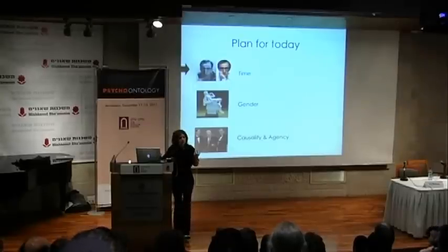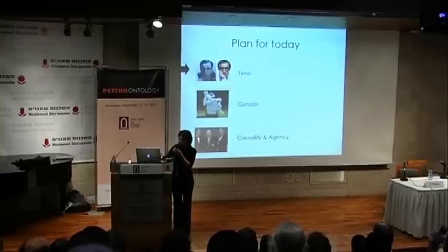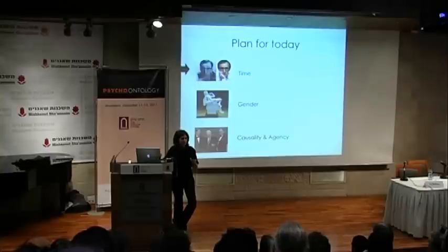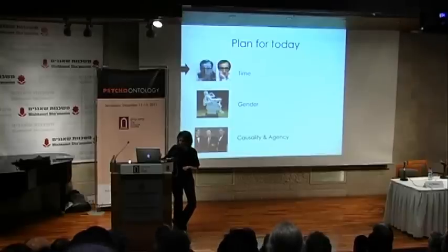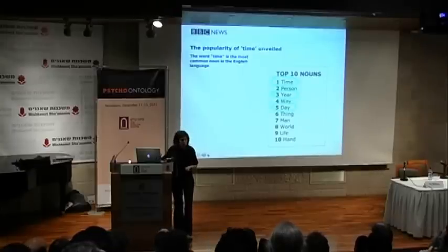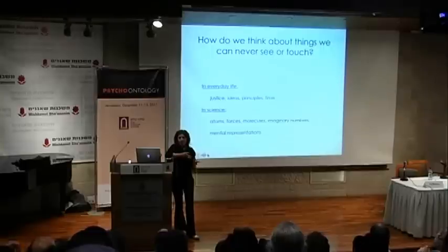Let me give you a few examples of ways that languages and cultures help us construct things that go beyond what is available in experience. I've picked three domains where the way we think about things is not strictly speaking the way those things really are. Let's start with our representations of time. The word 'time' itself is the most frequent noun in English. How do we think about it? This question is really part of a larger set of questions about how we think about abstract things — things we can't see, touch, or physically experience.